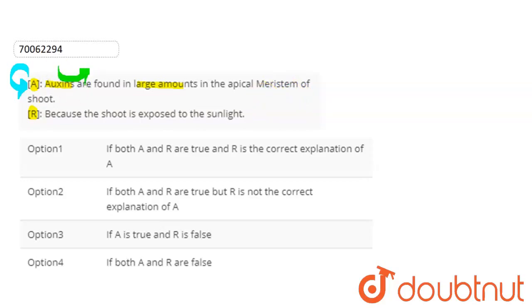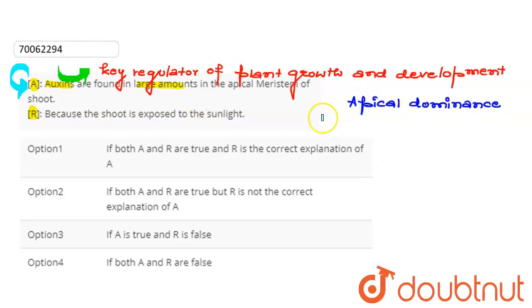First of all, we will talk about auxins. We will talk about the regulator of plant growth and development. Auxins are involved in elongation and differentiation and are well known for apical dominance. This is the apical dominance.